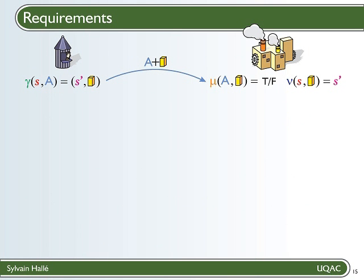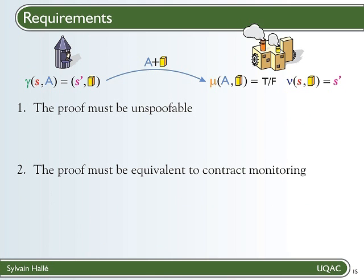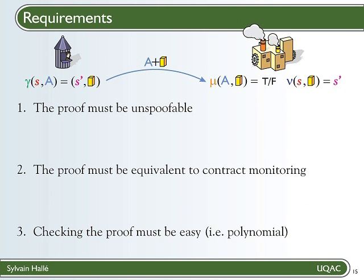The top of this picture shows the three functions involved in the process of sending a message. For such a thing to work properly, we must express requirements on each function. The first one is obvious: the proof must be unspoofable. The server could not trust a proof if it knows that the client can tamper with it or with the message that is sent once it has been computed. The second requirement is also fairly natural: since the server uses the proof to derive the next state of the protocol, that computation must lead it to the same state as if it simply computed the transition function from the message itself. And the whole point of the scheme is to save some processing on the server side, so checking the proof must be easy.